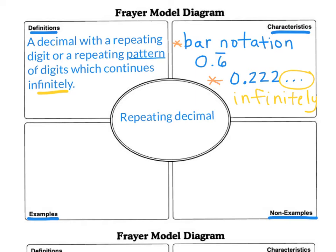Okay, let's fill in some examples of repeating decimals. We've kind of looked at a few already. So if I have 0.5 with bar notation, that's an example of a repeating decimal.